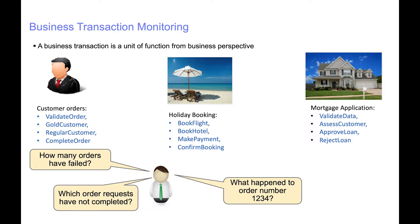A business transaction is a unit of function from a business perspective. This slide shows some examples of business transactions. A customer ordering process has different transactions which validates the order, checks if a customer is a gold or regular customer and then completes the transaction. A holiday booking comprises of booking the flight and hotel, making a payment and confirming the booking.